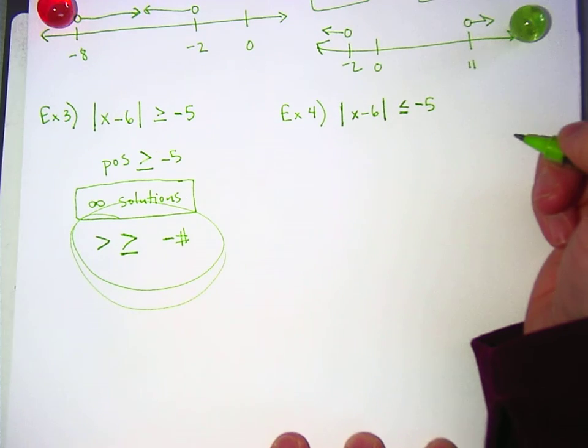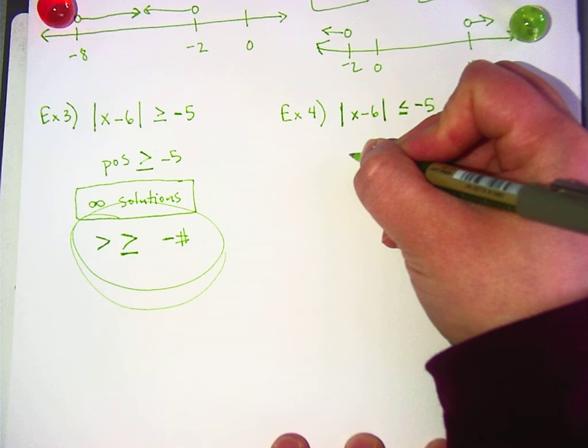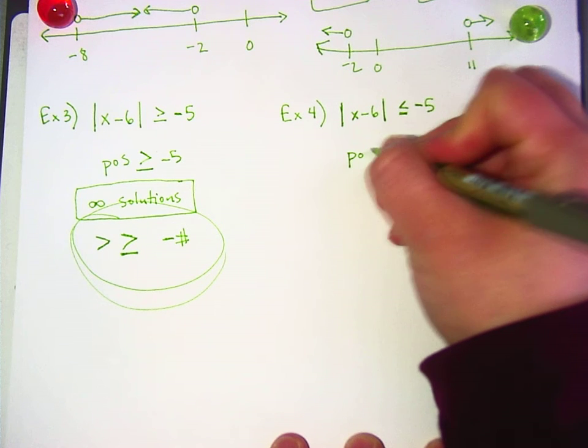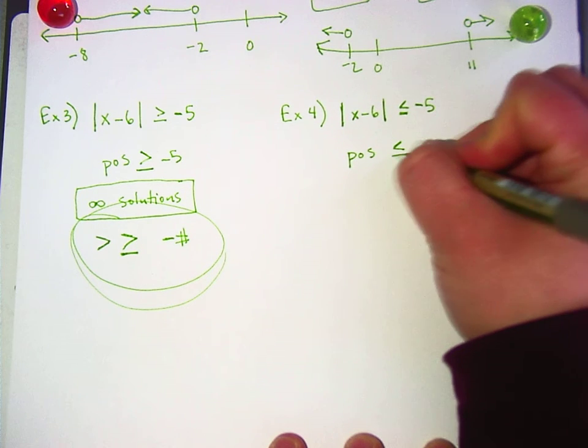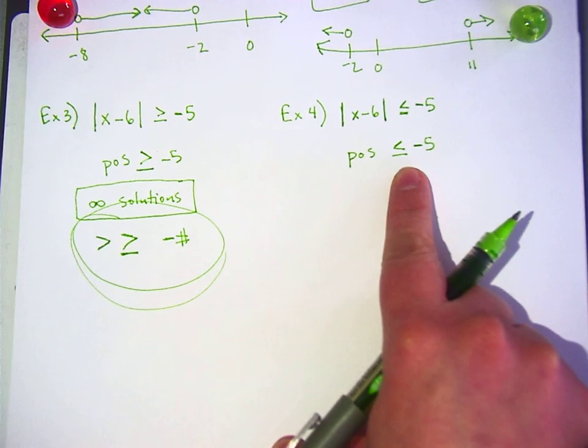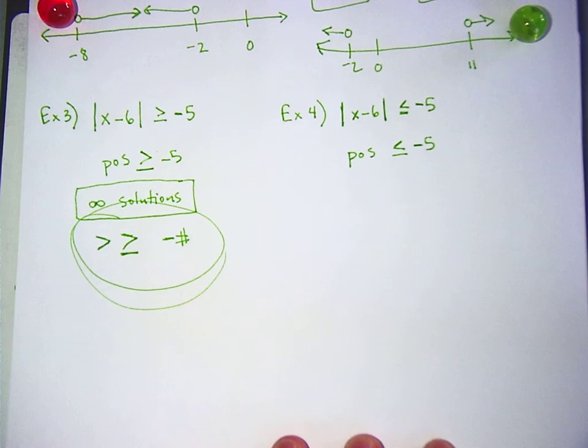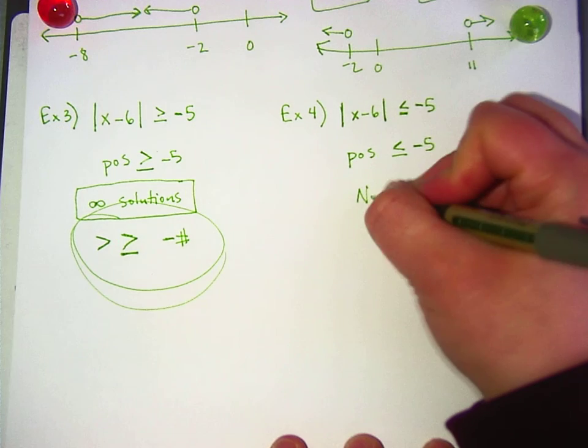Because no matter what we put in there, an absolute value can't be negative. Right. So it'll be positive over here no matter what. Yeah. And, like, since it's negative 5. Right. So it's basically saying when can a positive number be less than negative 5, which would mean it'd have to be, like, at least negative 5.001 or whatever. And it can never be. So this is no solution here.